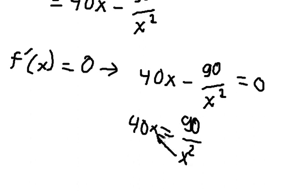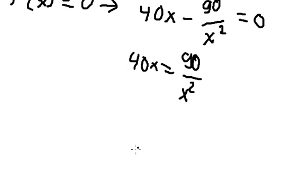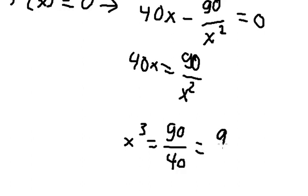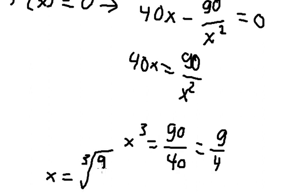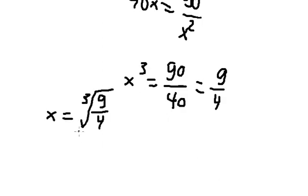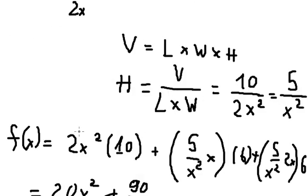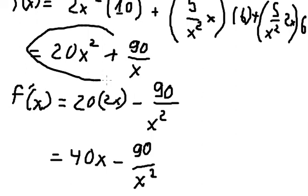This one I will put on the left, 40 we put on the right, and we have x cubed equals 90 over 40, which is 9 over 4. So x in here should be about the cube root of 9 over 4. And after that we put this one back into this function in here.